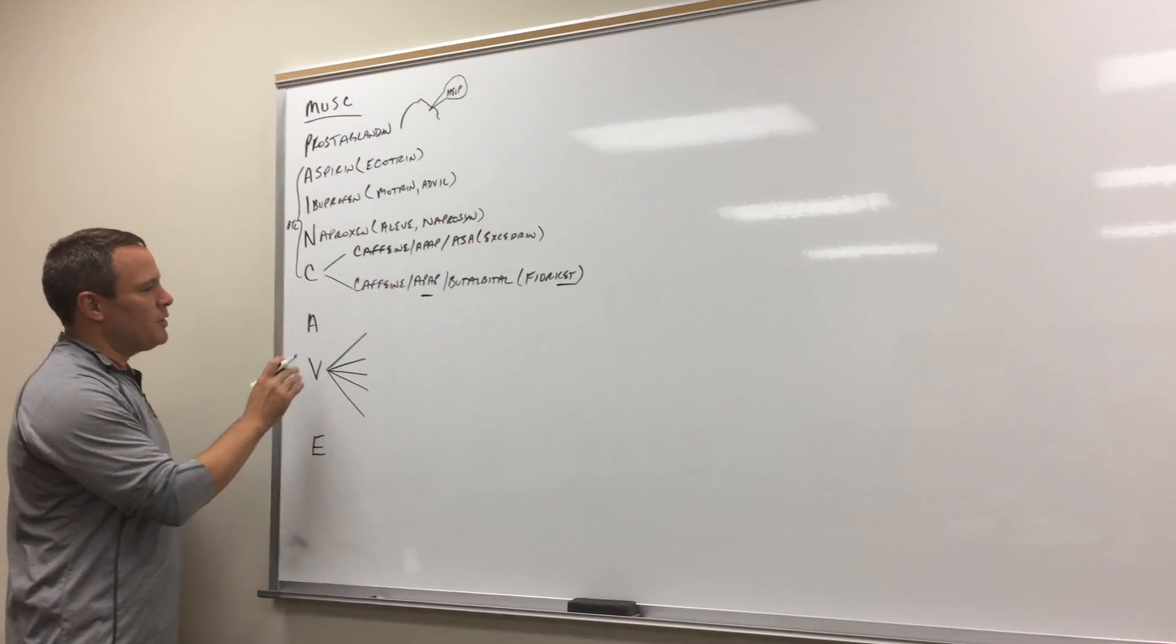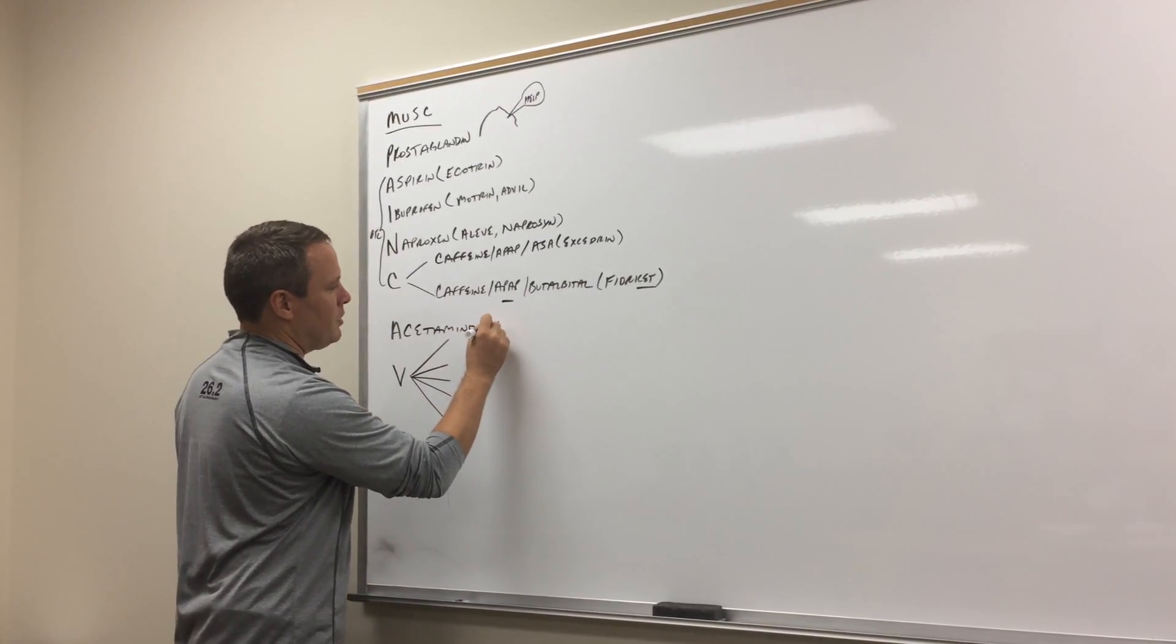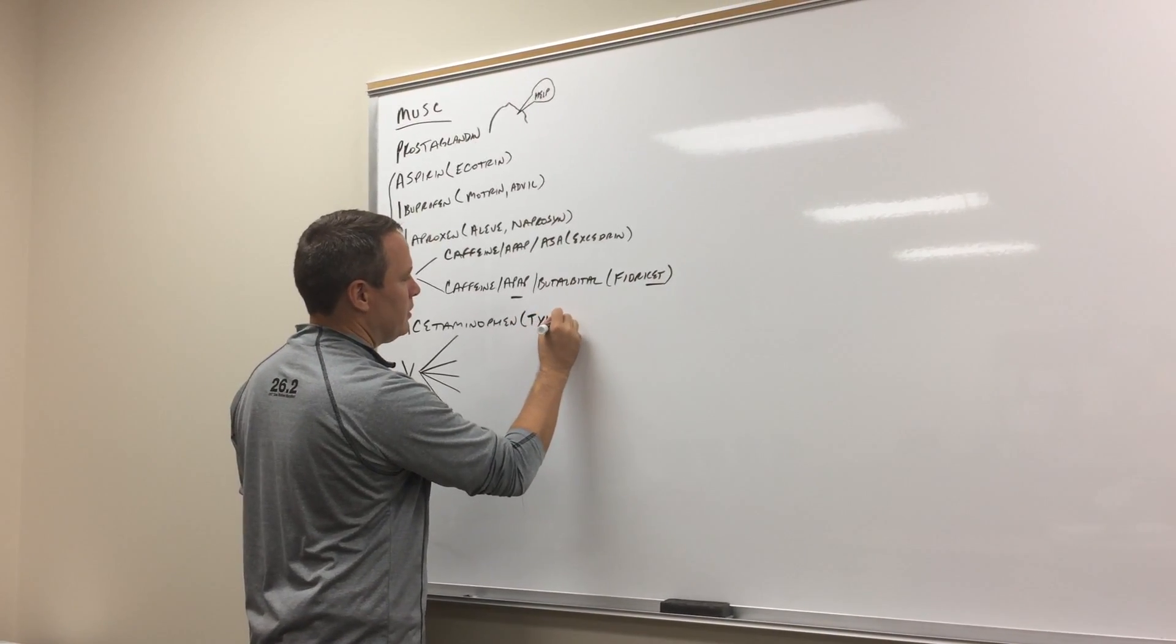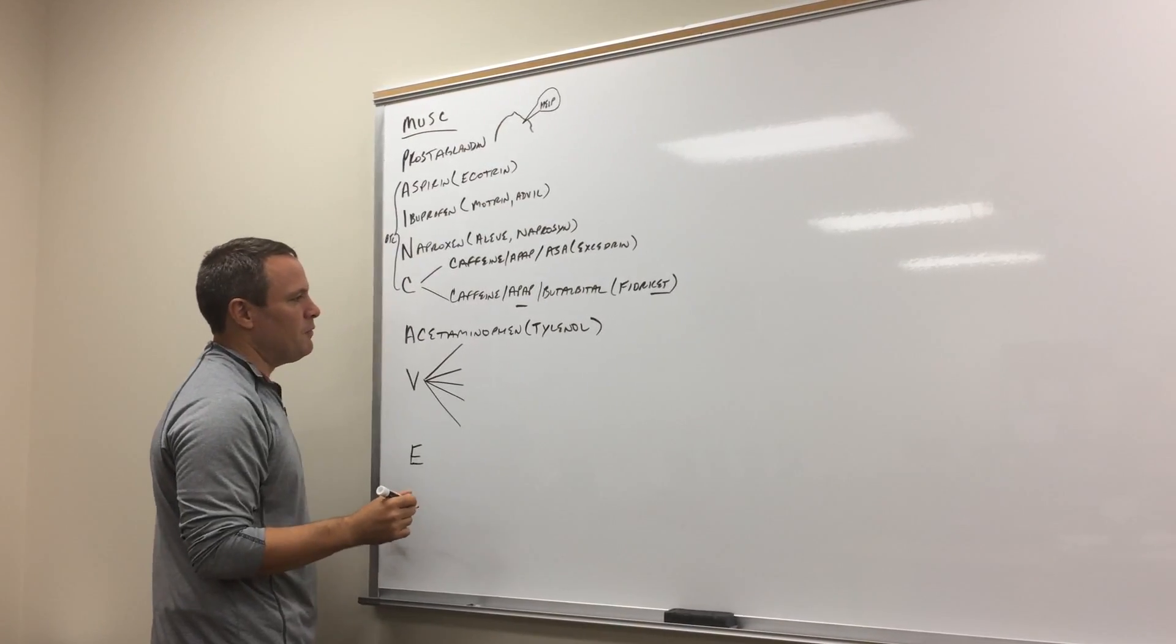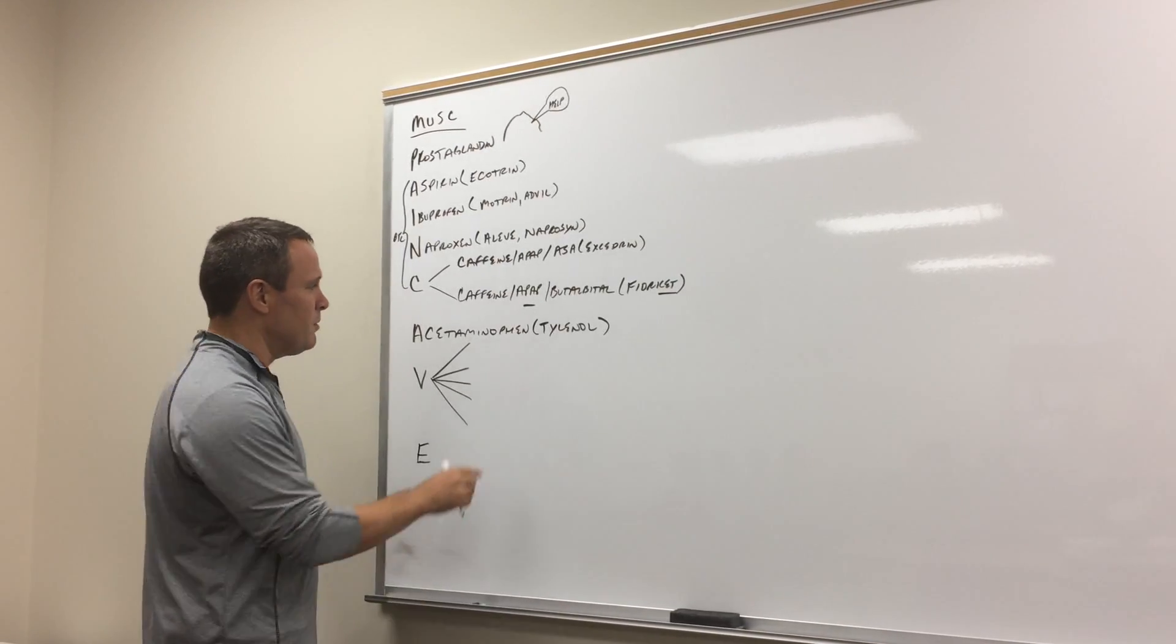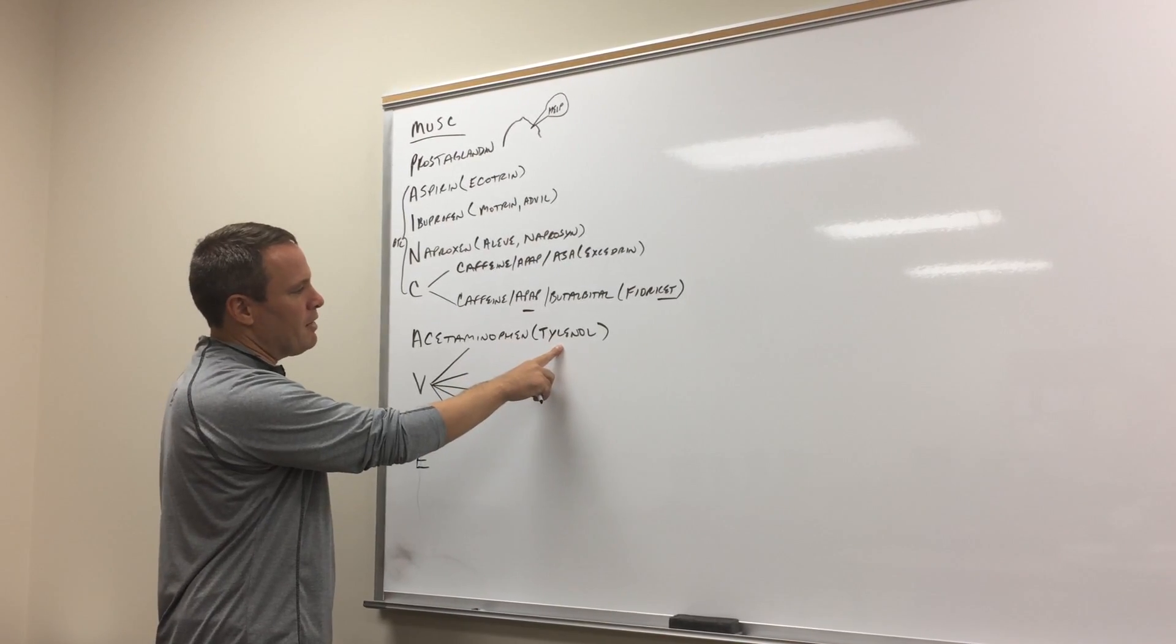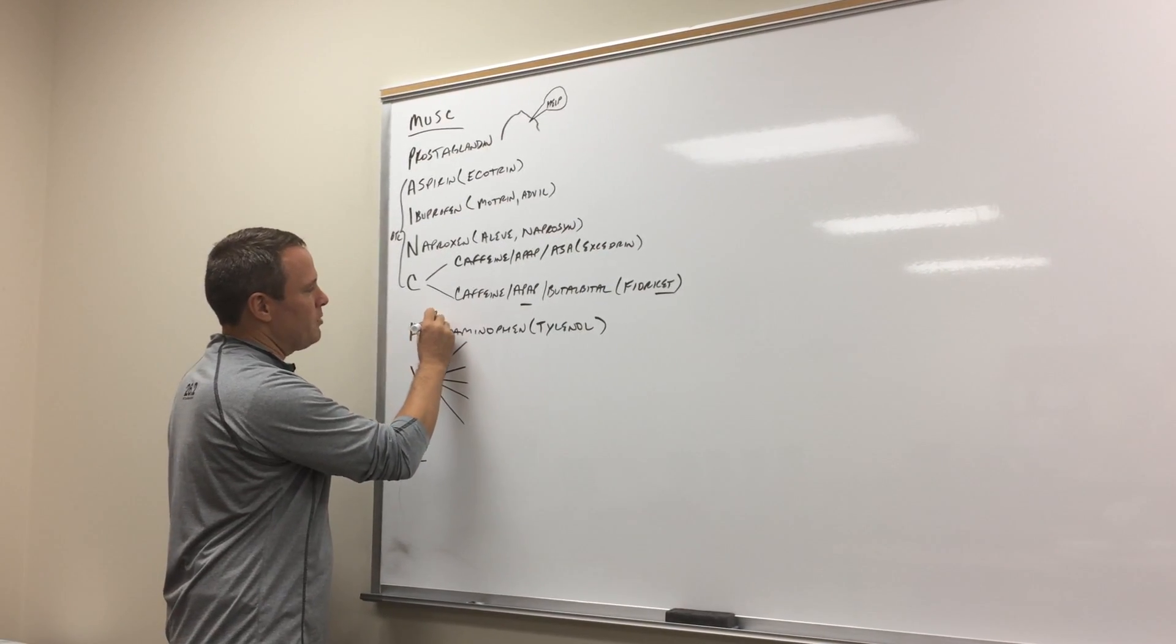And then we go to acetaminophen alone. The other drugs that are combination with acetaminophen we'll cover in the opioid part. And this is Tylenol. It probably has other things as well. And if you want to get technical, you want to go to other countries, there's other words that we'll use for acetaminophen. And then they'll have other brand names as well. But usually you'll see paracetamol.